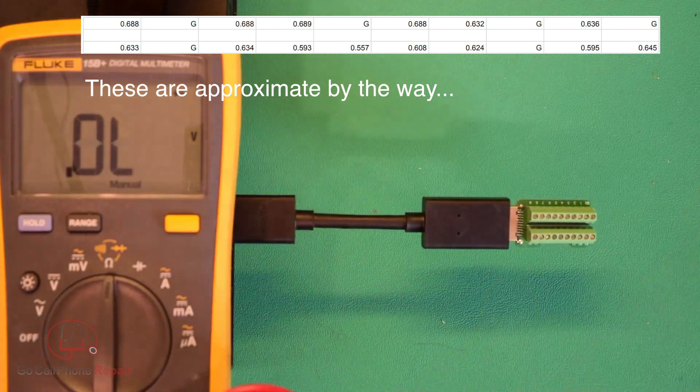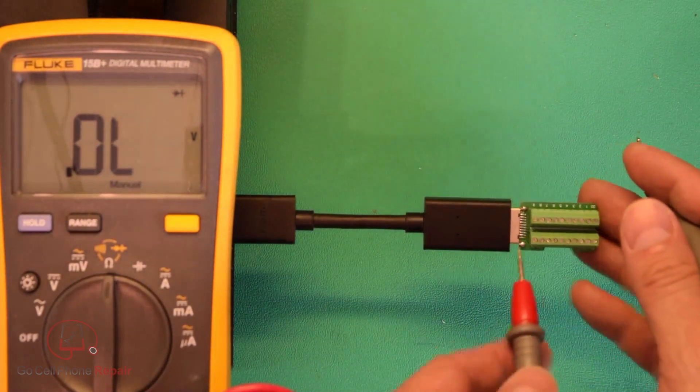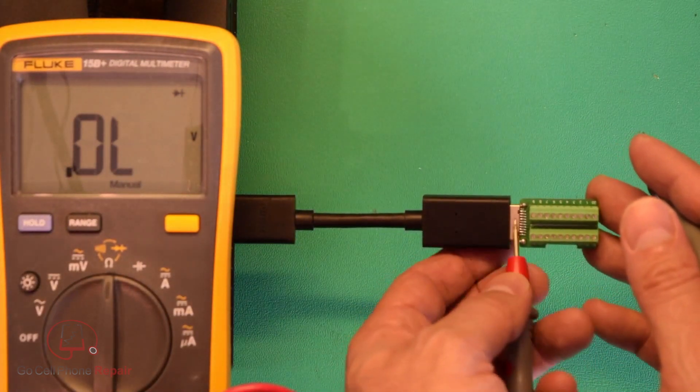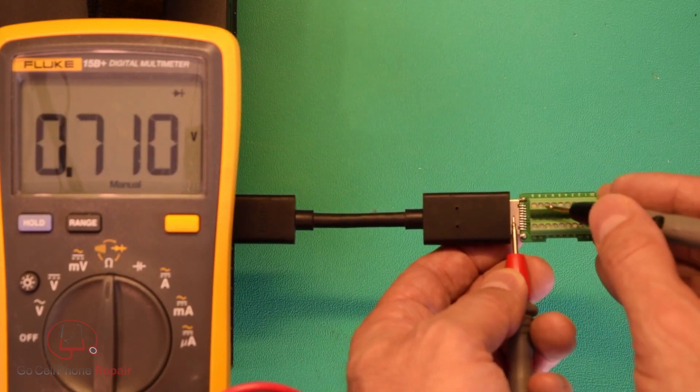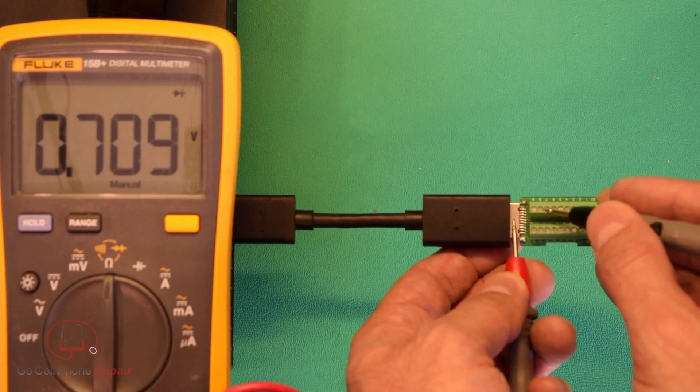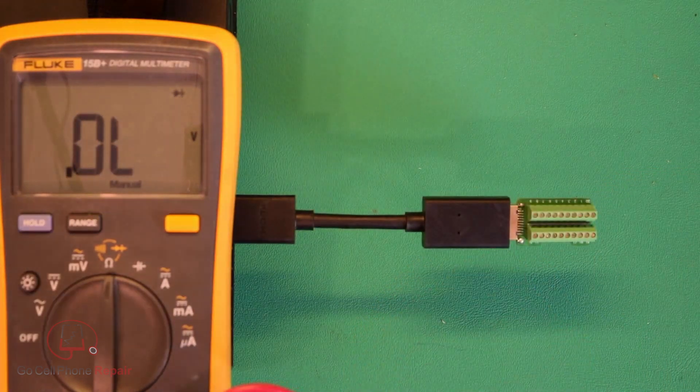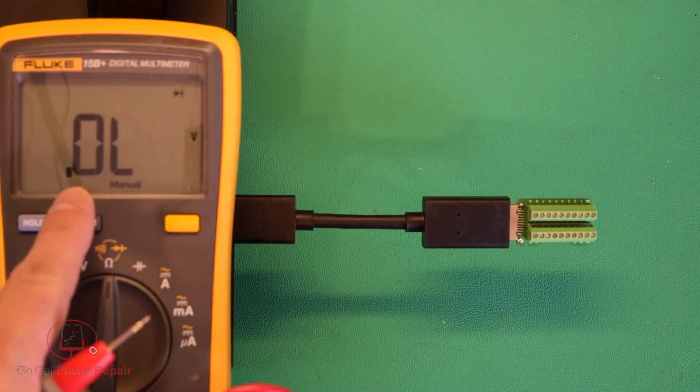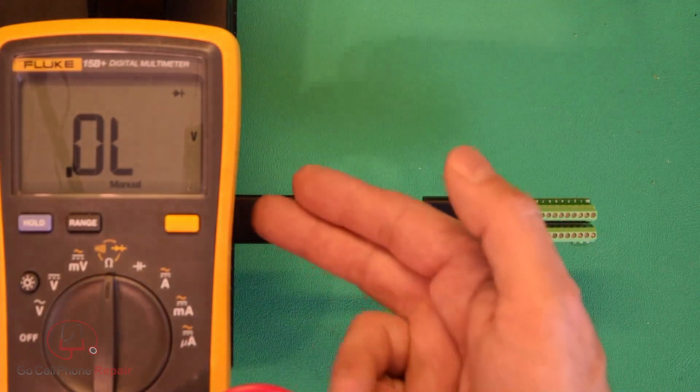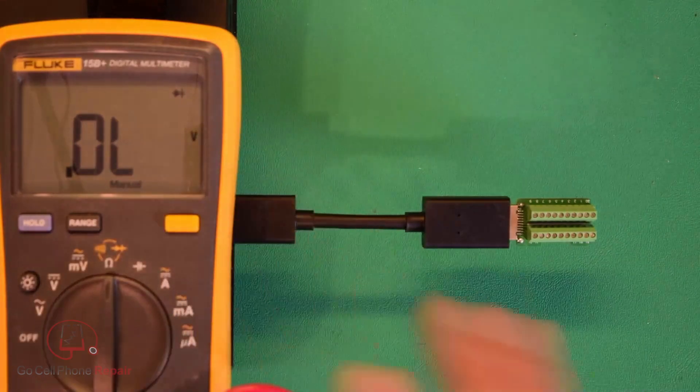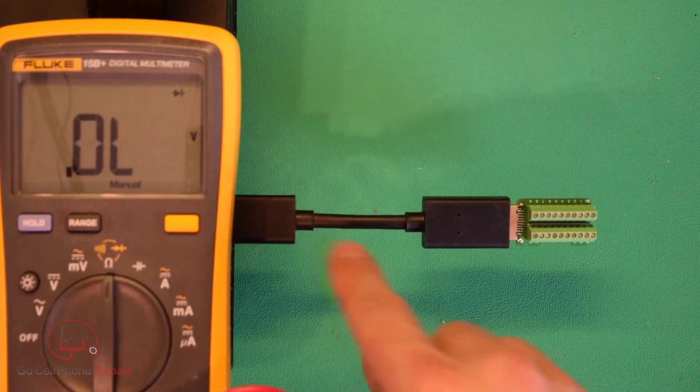Now these don't have to be exactly the same number that I showed you here. They will vary a bit. These things will probably range anywhere from about 545 up to 725, somewhere in that range. If you have an OL anywhere that it wasn't indicated here, or if you're showing a ground where you shouldn't, then you know there's a problem with the port itself, or could still be something on the inside.